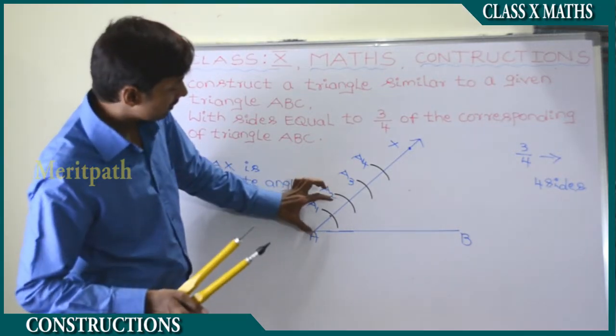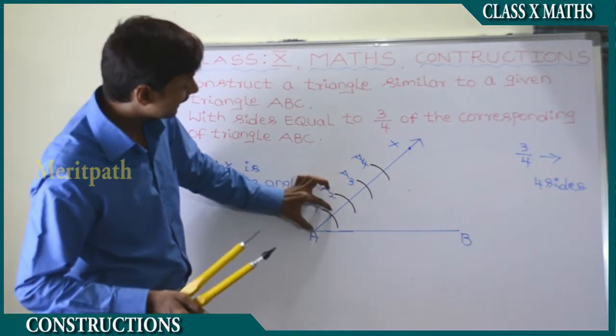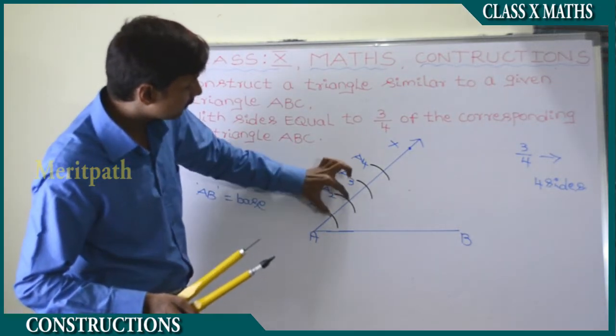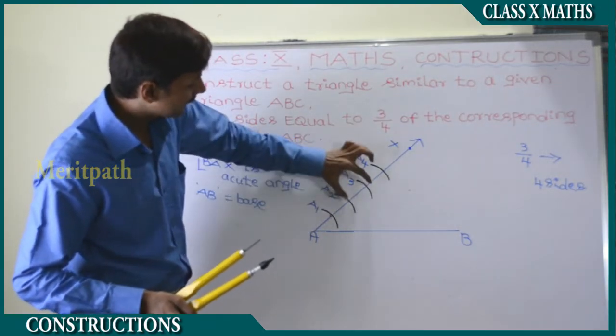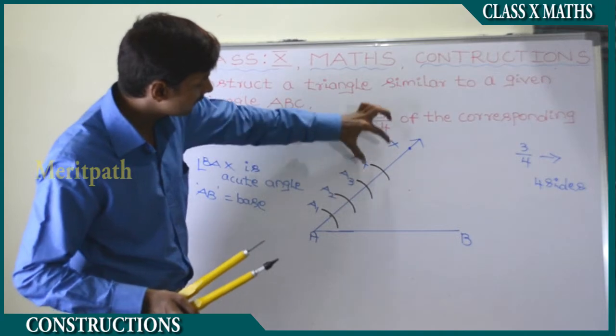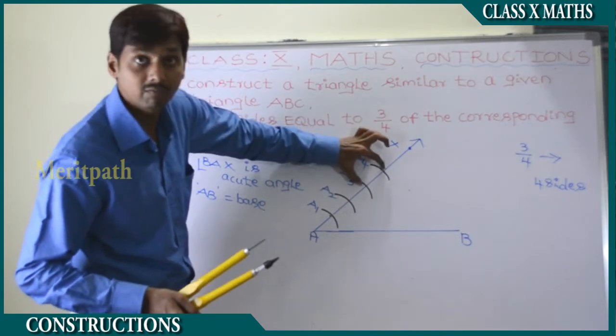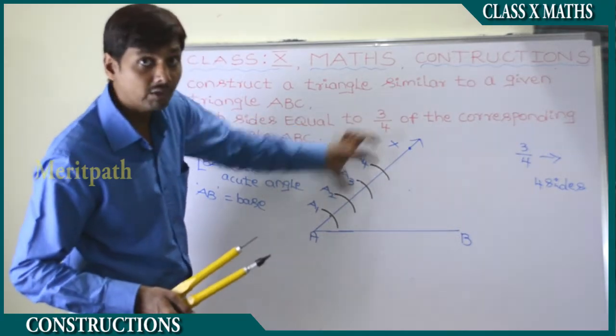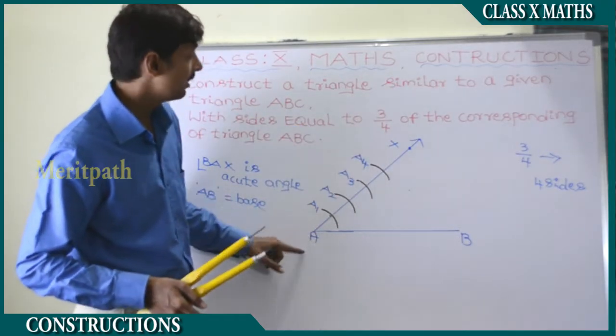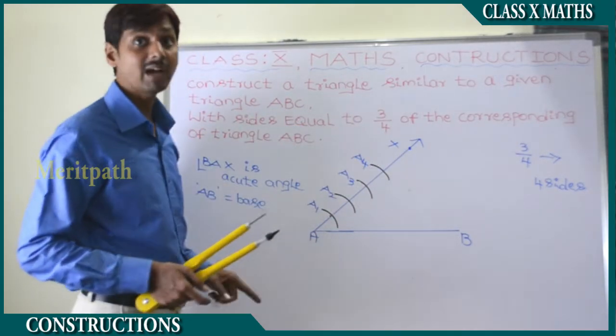That's A1 and A1. A1, A2, A2, A3 and A3, A4 are four equal parts which we have divided.